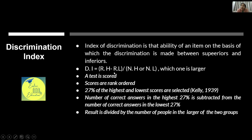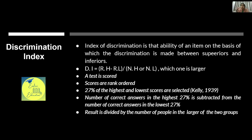The formula for discrimination index is: DI = (RH − RL) / NH or NL (whichever is larger). To calculate it: first the test is scored, then scores are rank-ordered from highest to lowest — just as we rank students in class.